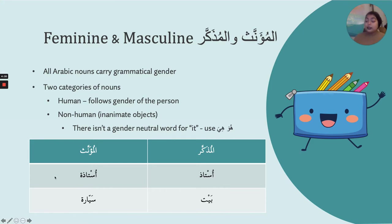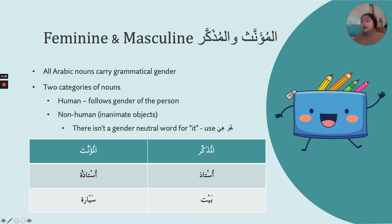You should remember that when you add a ta'marboota to the end of a noun to make it feminine, if it follows a letter that does not connect — like dhal, ra, or zay — then the ta'marboota is written separately. If it follows a connecting letter, the ta'marboota will connect, looking like a little flag with two dots. You can also connect the two dots into a line.